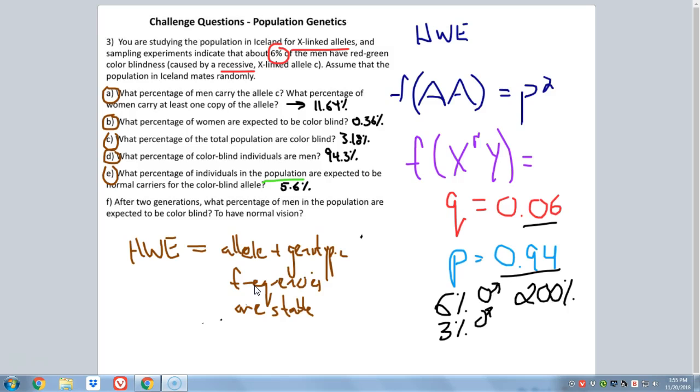And eight generations from now, 6% of them will be colorblind and 94% of them will be normal. Regardless of anything else, because this population is in Hardy-Weinberg equilibrium. So that's how we would go about tackling number three.